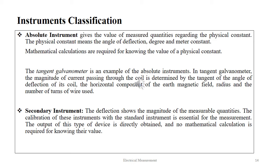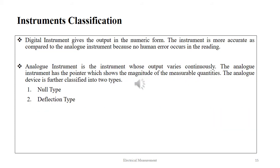The deflection showing the magnitude of the measuring quantities is the primary necessity of a secondary instrument. Calibration of these instruments with a standard instrument is essential for measurement. The output is directly obtained and no mathematical calculation is required. The digital instrument gives the output in numeric form and is more accurate than the analog instrument because no human error occurs in reading. The analog instrument is the instrument whose output varies continuously, with a pointer showing the magnitude of the measurable quantity.